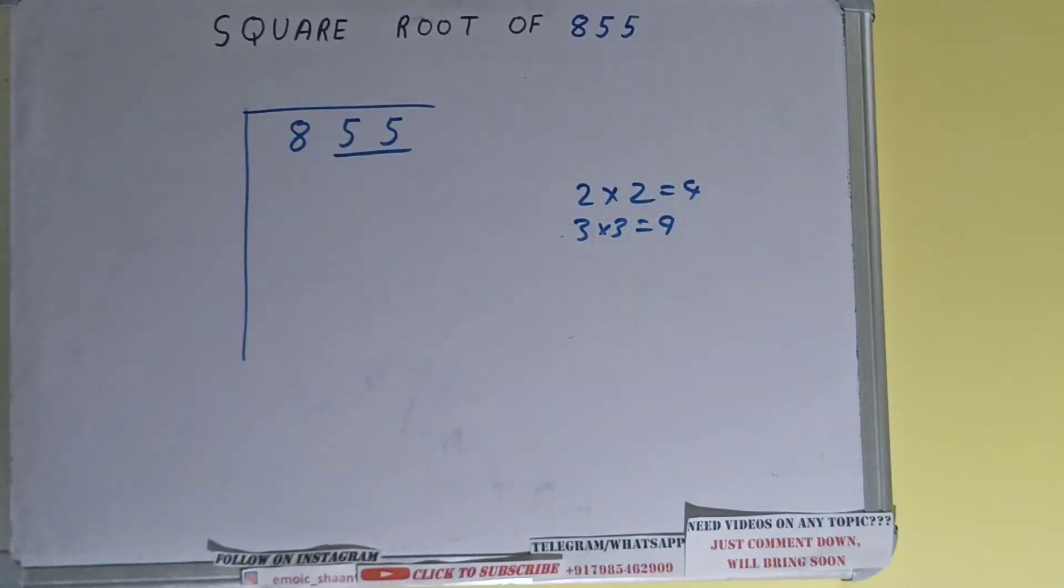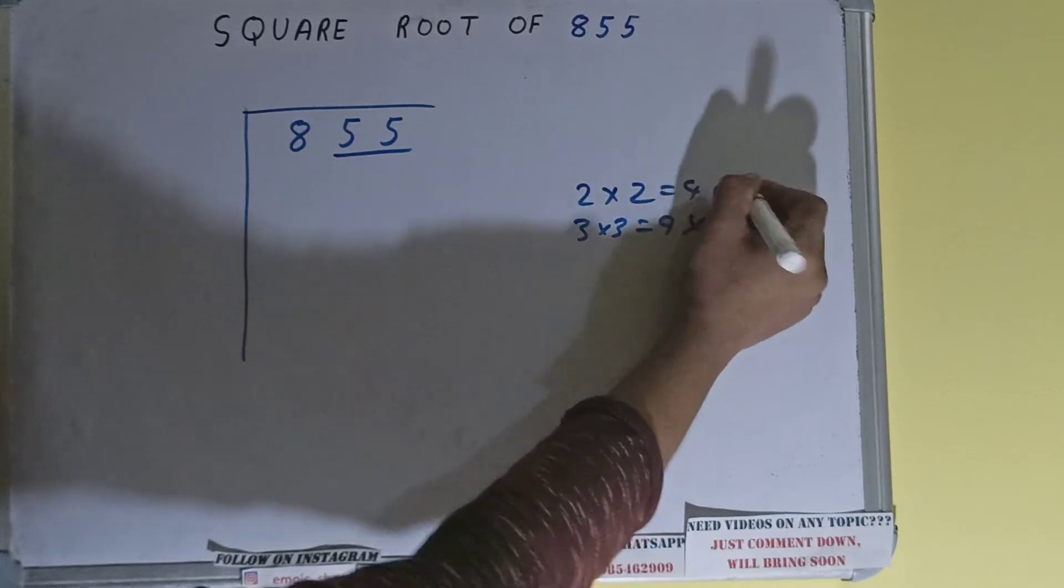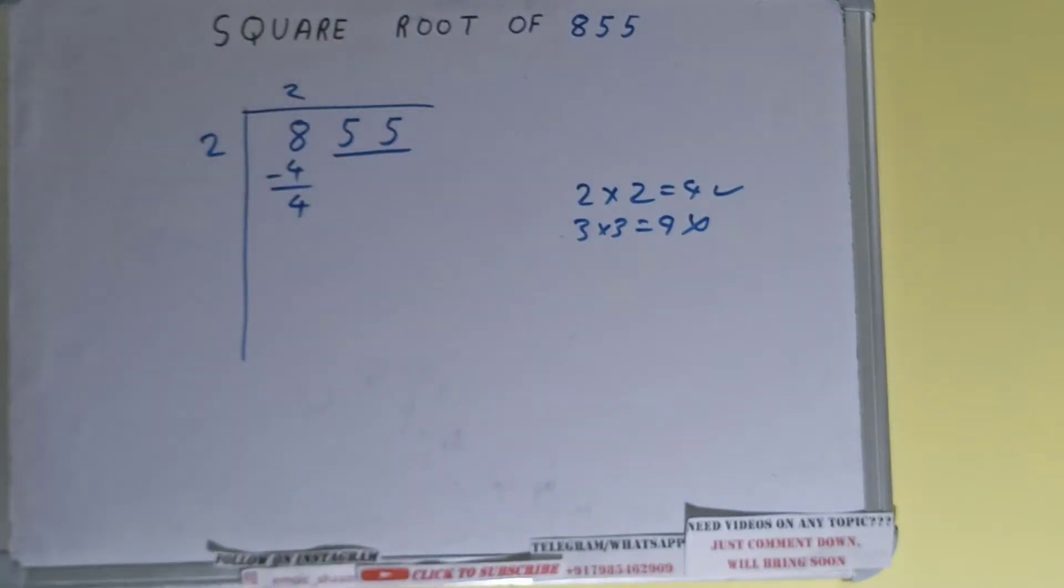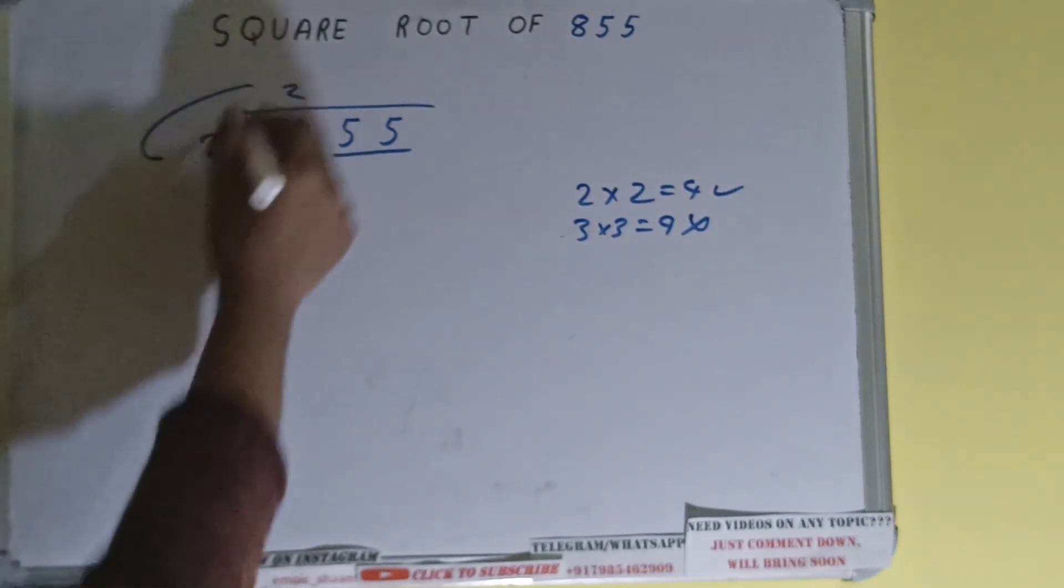So 9 we cannot use because it is greater than 8, so we have to use 4. So 2 here and 2 here, it will be 4. Subtract and 4 will be left.